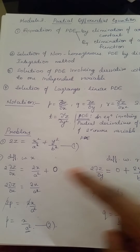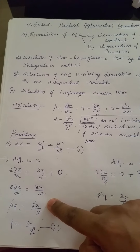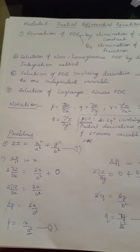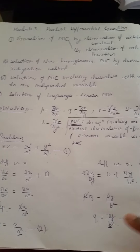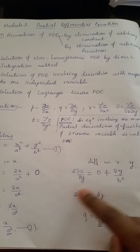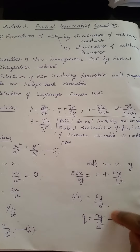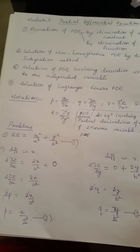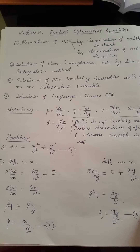Simplifying, the factor of 2 cancels, giving us p = x/a² as Equation 2, and q = y/b² as Equation 3.